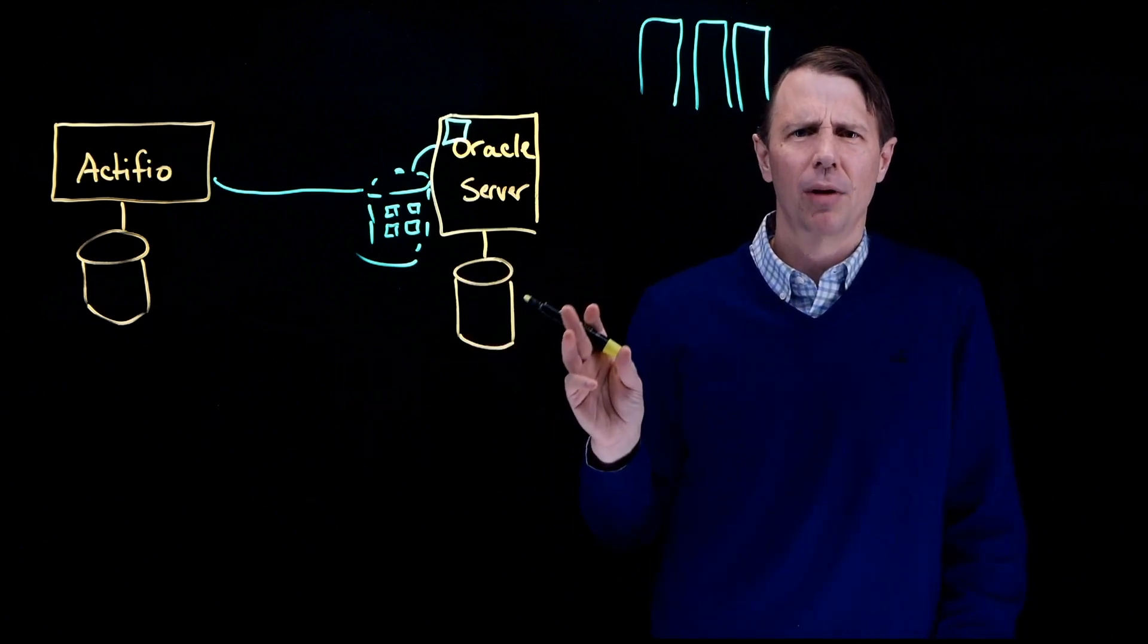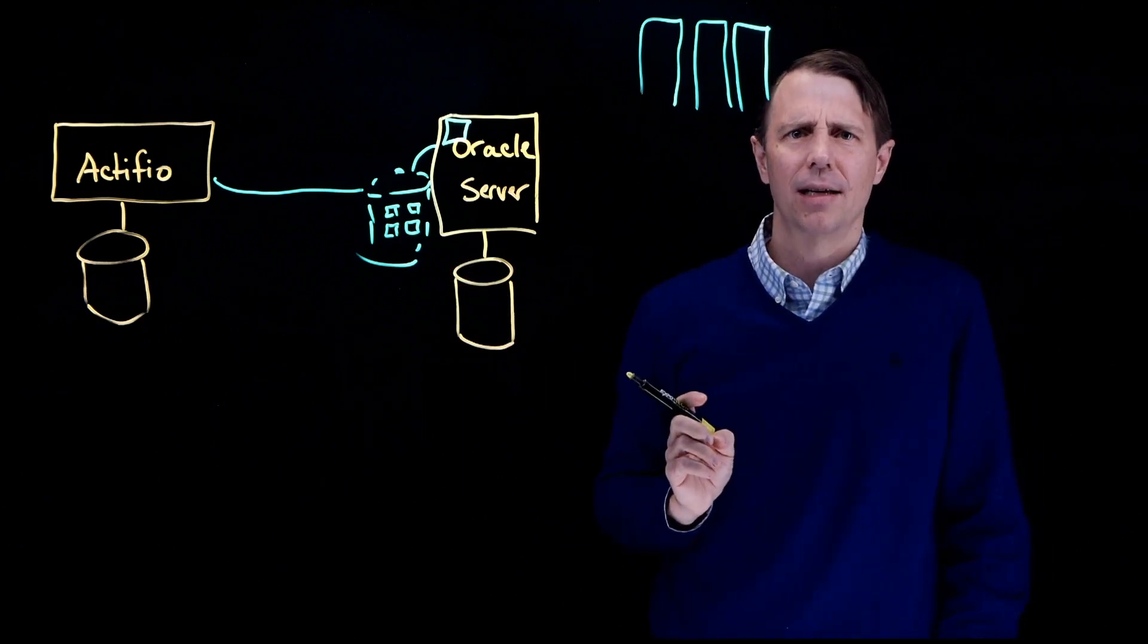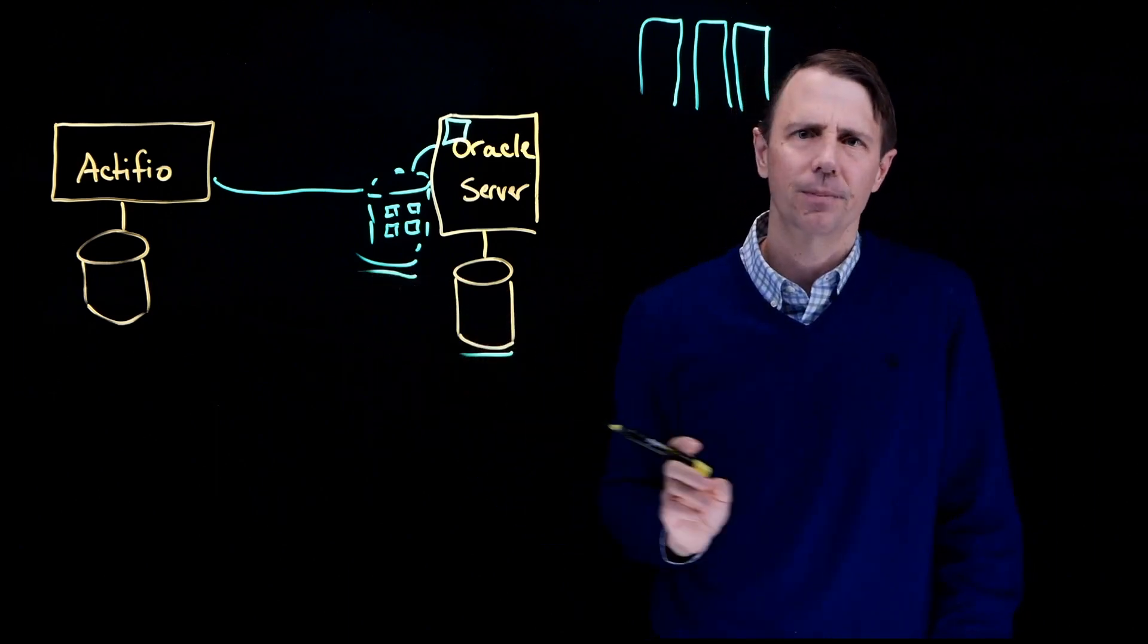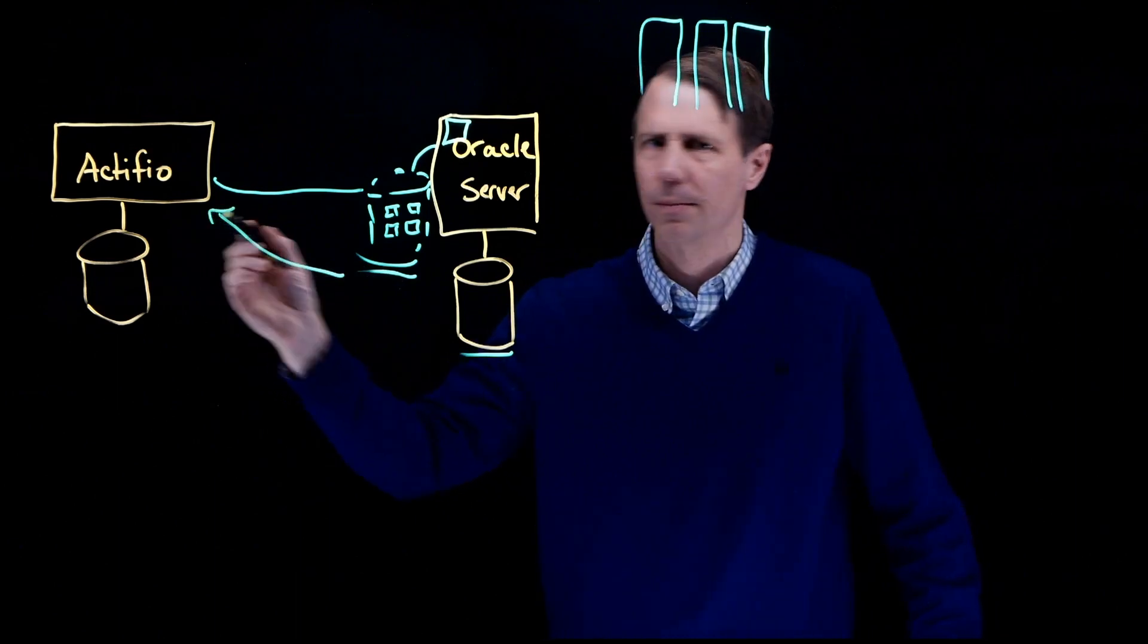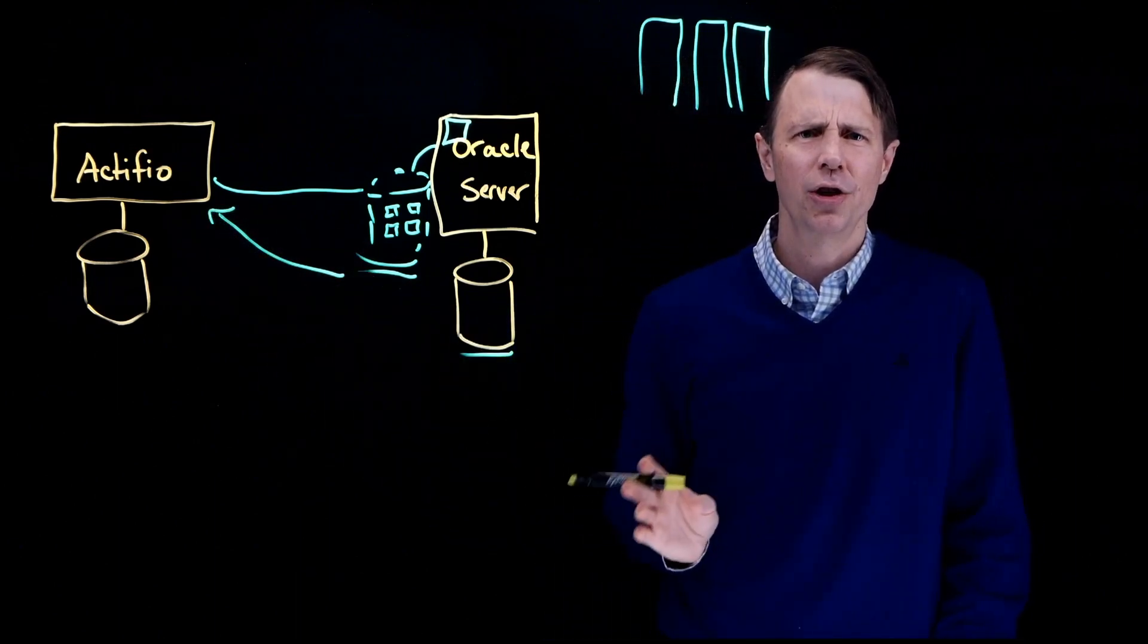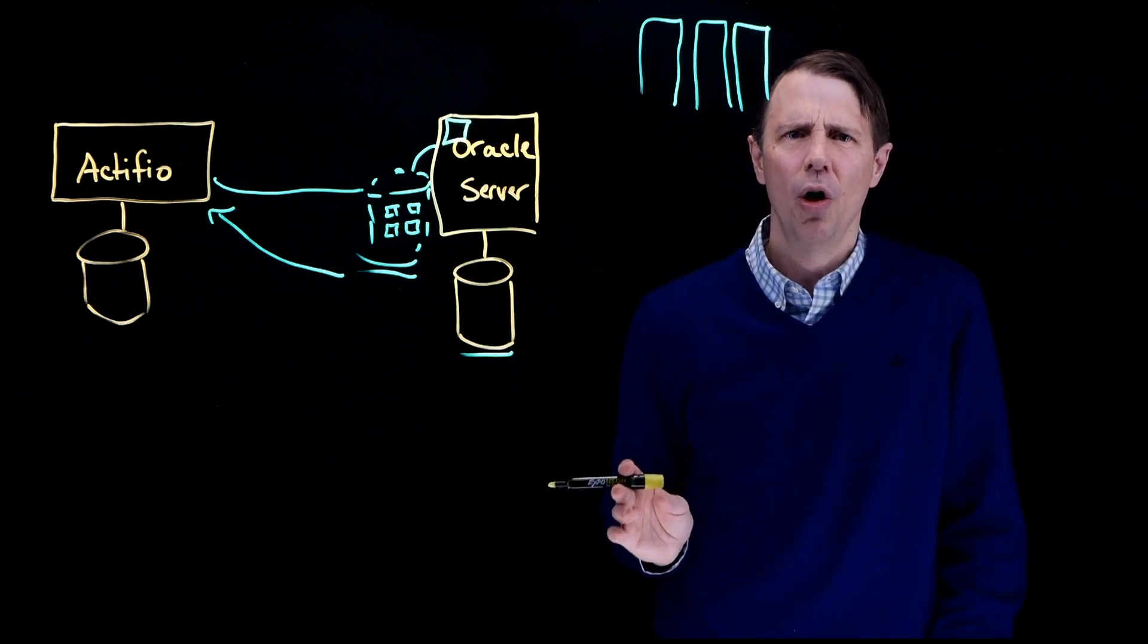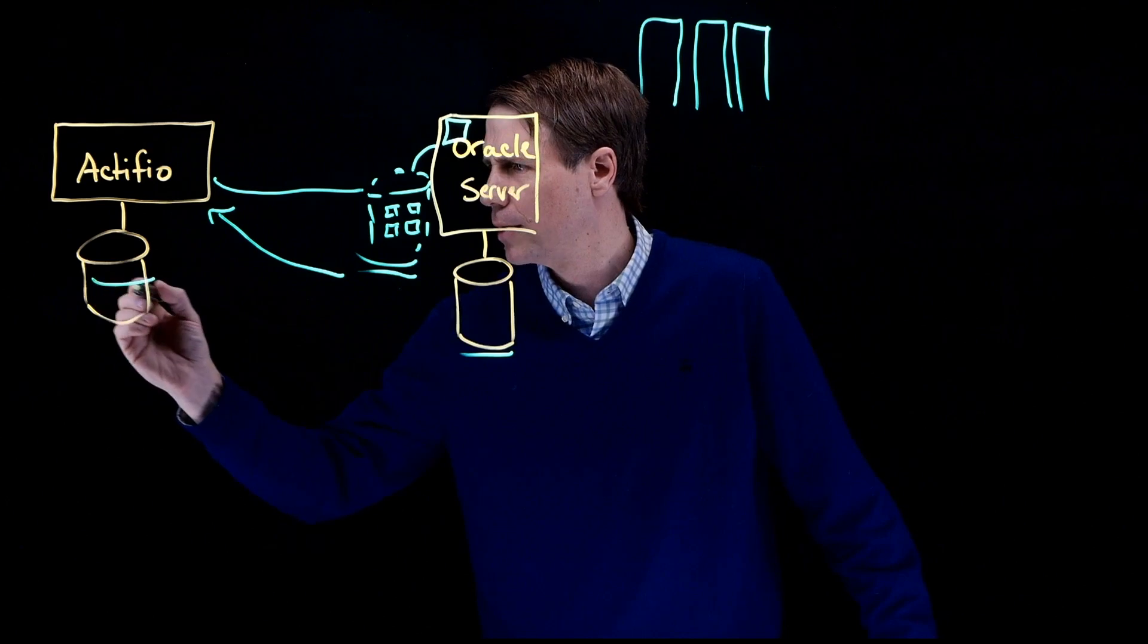The changed blocks are then applied to the Actifio volume, and at the end of the process, the presented volume matches the production instance. This matches that. The Actifio volume is then unmounted. And finally, the Actifio Sky virtual appliance issues an internal snapshot of the updated volume and synthesizes a point-in-time virtual full, which is stored on the storage platform or cloud of the customer's choice.